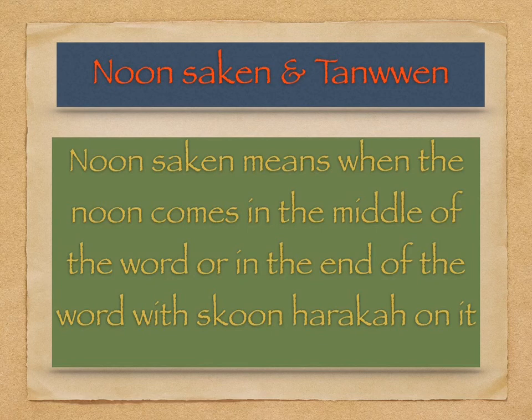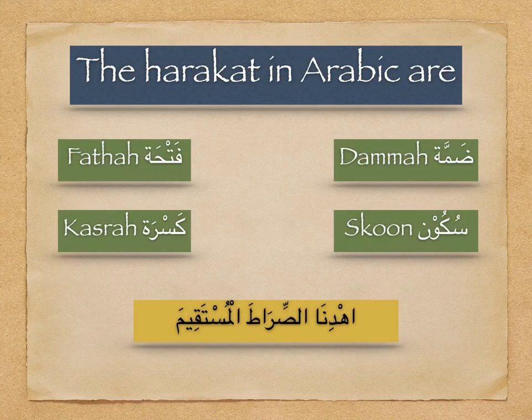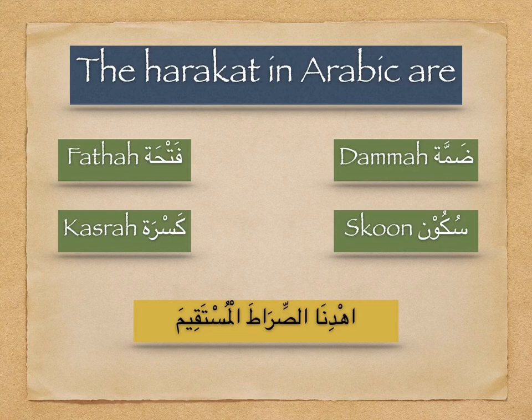What I mean by Noon Sakin is when the Noon comes in the middle of the word or at the end of the word with Sukun — no Harakah over the Noon. You know that we have more than one Harakah in Arabic: the Fathah (called Zabr in Urdu), the Kesra (called Zair), the Dhamma (called Pesh), and the Sukun, which is a circle or half circle over the letter, meaning this letter is silent — not moving with Fathah, Kesra, or Dhamma.